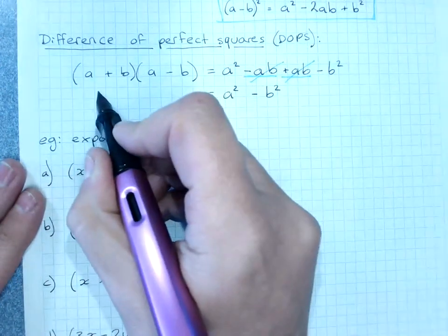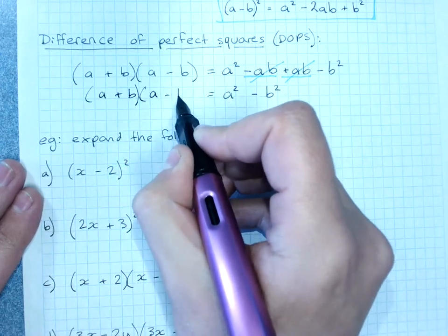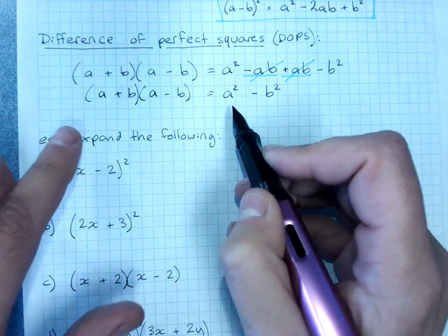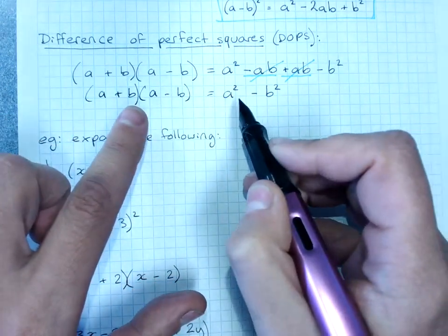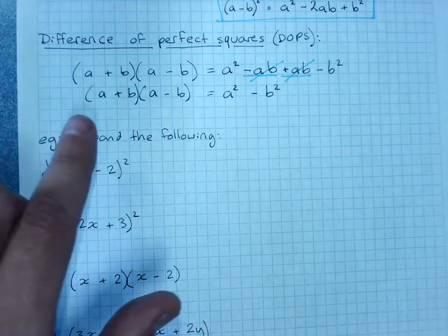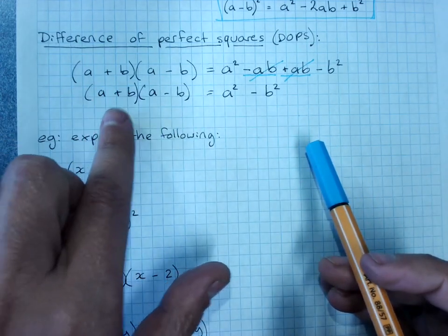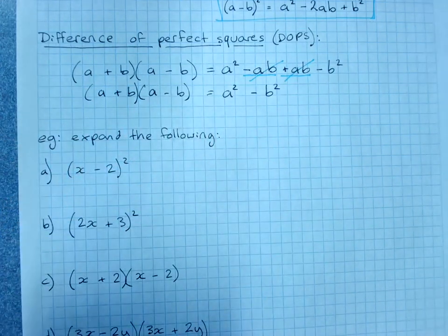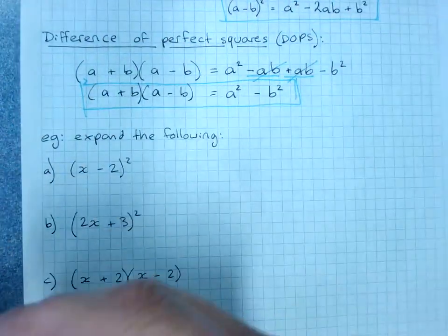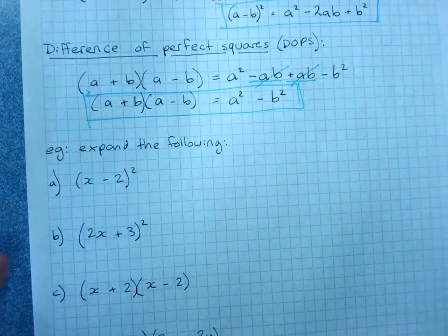So when you have (a+b)(a-b), the same terms in the brackets but one's plus and one's minus, you will get the first term squared minus the second term squared as your answer. And again, if you recognize that this is a difference of perfect squares, you can go straight to the answer. If you don't recognize it, it's always safest just to do the full expansion and make sure you get the right answer.